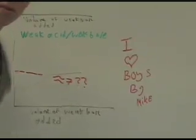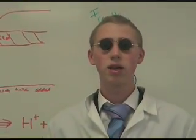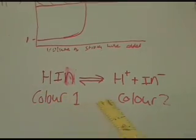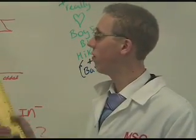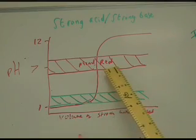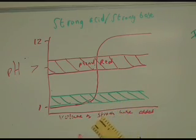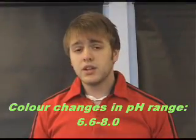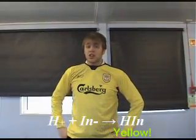Oh, what's this? Indicators are really weak organic acids. They are one colour in acidic conditions and another colour in alkaline solutions. This means we can use them to help find the equivalence volume in a titration. Here we can see that phenol red is the best choice because indicator 2 changes colour outside of the equivalence range. Hi, I'm the indicator phenol red. My pH range is 6.6 to 8. That means in pHs over 8 I'm red, and in pHs below 6 I'm yellow.